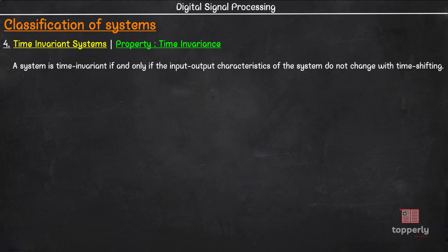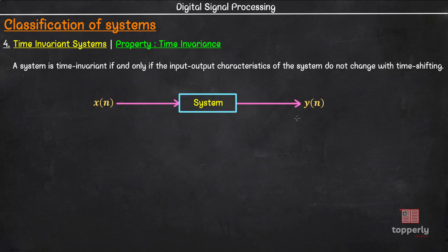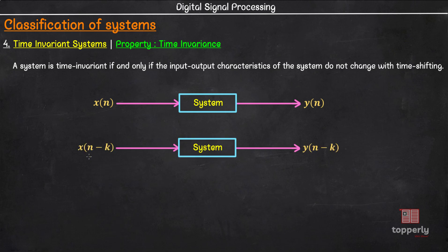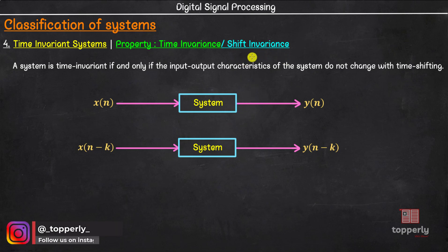A system is time invariant if and only if the input-output characteristics of the system do not change with time shifting. That is, suppose y(n) is the output of the system for an input x(n). Then, if we delay the input to the same system by some amount k, the output of the system should also be delayed by the same amount k. If the input x provides y as output, then the system is time invariant. This time invariance property is also known by the name shift invariance, which is a more generalized term as we may not always be dealing with the time domain.